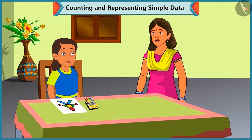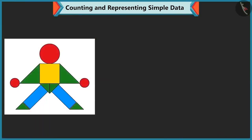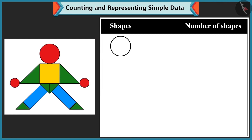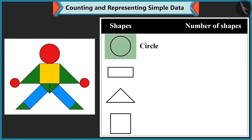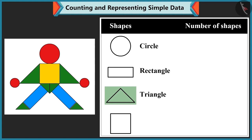Mummy asks what Bubbly is doing and compliments the beautiful picture. She asks Bubbly to name the shapes present. Bubbly identifies a circle, a rectangle, a triangle, and a square, and confirms all four shape names.